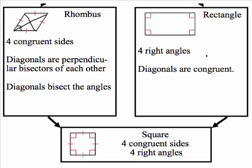Rectangles are a special type of parallelogram that have four right angles, and their diagonals are congruent. So if you draw diagonals on a rectangle, those diagonals will be the exact same measure. Squares are actually a combination of rhombuses and rectangles — they have four congruent sides and four right angles, meaning squares inherit the properties of both rhombuses and rectangles.